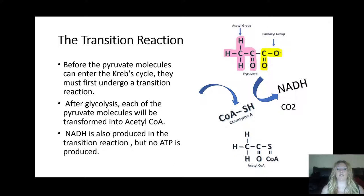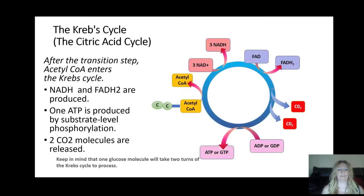Before pyruvate can enter the Krebs cycle it undergoes a transition reaction: each pyruvate molecule is transformed into acetyl-CoA. During this process, carbon dioxide is released and NADH is produced, but no ATP is made. The acetyl-CoA then enters the Krebs cycle, where more NADH and FADH₂ are produced, one ATP is made by substrate-level phosphorylation, and more CO₂ is released. One glucose molecule takes two turns of the Krebs cycle to be fully processed.